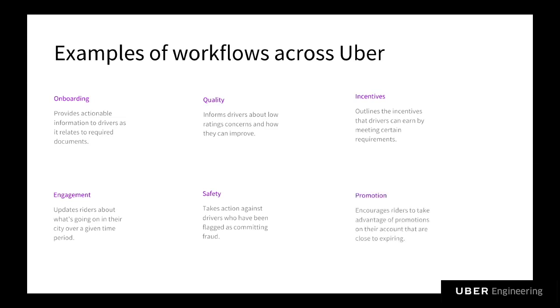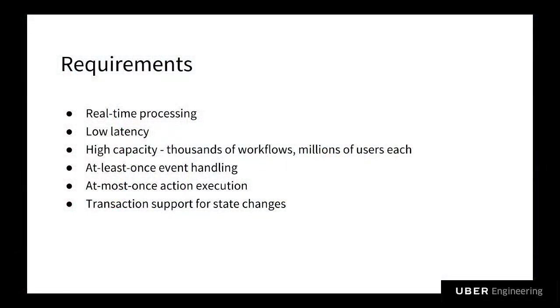Now I'm going to hand it off to Xun to explain inside Flow's architecture. So before diving into architecture, let's first take a look at the design requirements. First, Flow is event-driven, so it requires real-time processing. Secondly, it is low latency and high capacity, so it can handle thousands of workflows and millions of users in a timely manner. Reliability-wise, for event processing, it requires zero event loss. But for action execution, it's important to guarantee at-most-once execution — for example, sending the same email to the same user multiple times is a very bad user experience. Lastly, for state transition correctness, it's important to have transaction support.